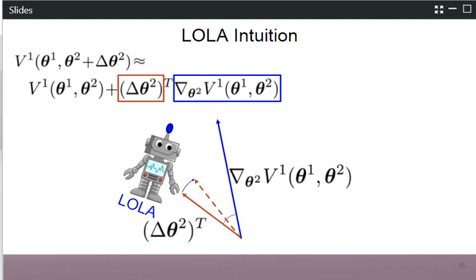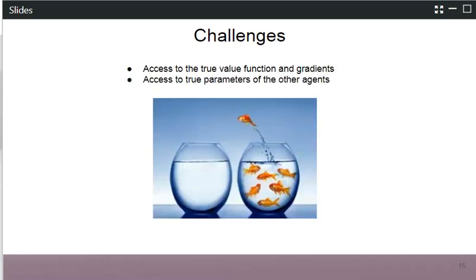So there are two open challenges. While this is fantastic in principle, we have assumed in this derivation that we have access to the true value function and the gradient of everyone involved in the game. Furthermore, we also assumed we have the true parameters of all agents in the game. These two assumptions will be relaxed in the rest of the presentation.